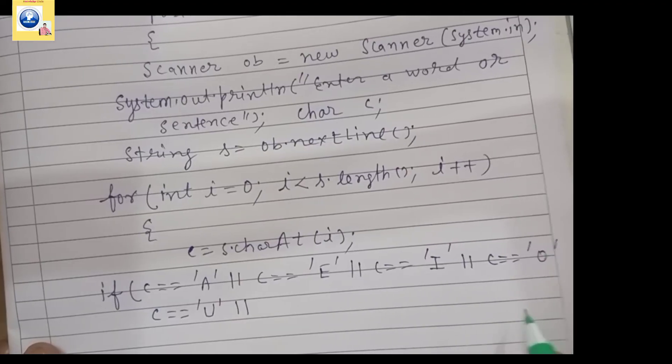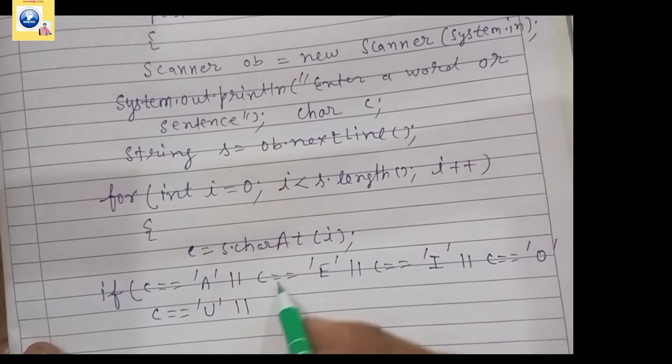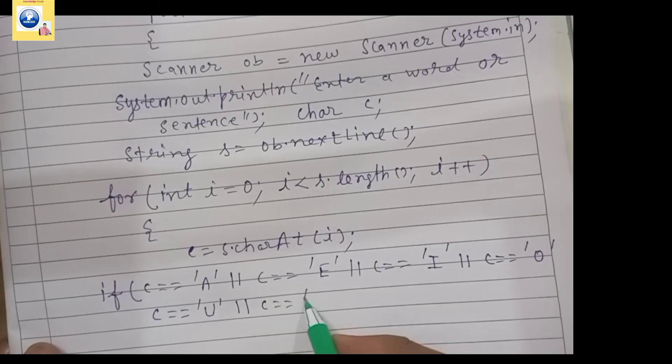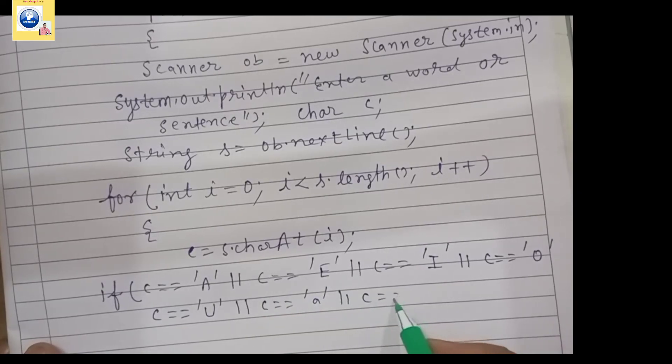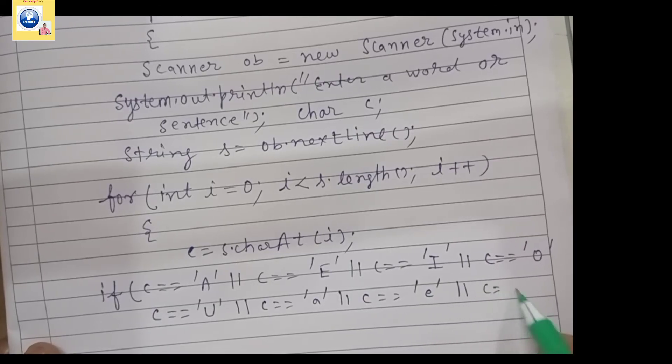So we did it for first five capital vowels: one, two, three, four, five. Same thing we have to repeat for small letters also. So we will write here or operator if c equals 'a', 'e', 'i'.